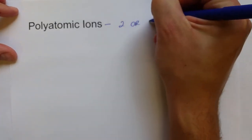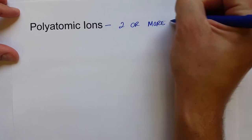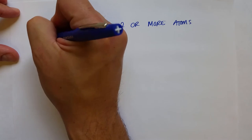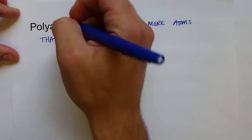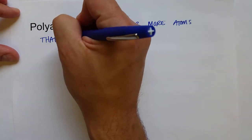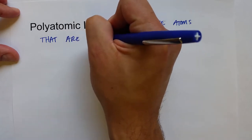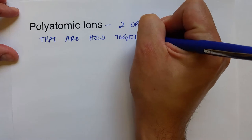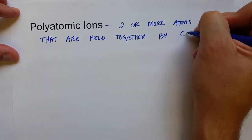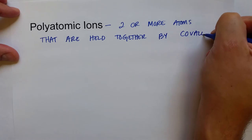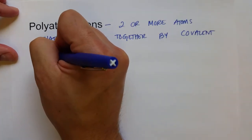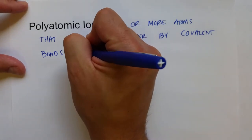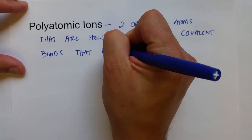So it's two or more atoms that have covalent bonds between them. So they are held together by covalent bonds, and since they're ions, that means they have a net charge that have an overall positive or negative charge.